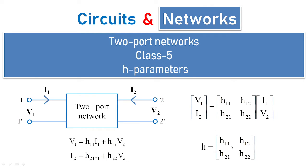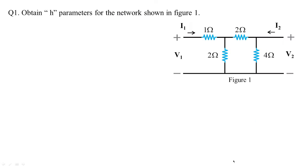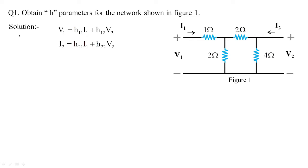These are the parameters we need to find. In the first example, we need to find the h parameters for the circuit shown in Figure 1. There is a combination of passive resistors: 1 ohm, 2 ohms, 2 ohms, and 4 ohms. The input side has parameters v1 and i1; the output side has parameters v2 and i2.